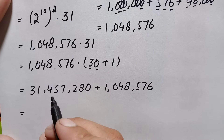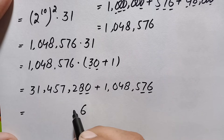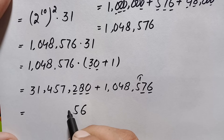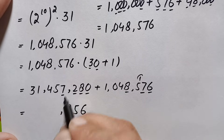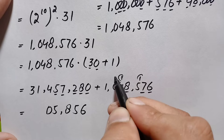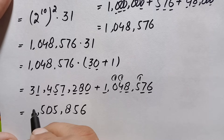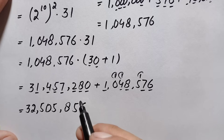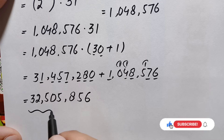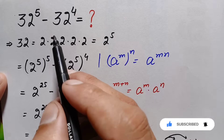Finally, adding 31,457,280 plus 1,048,576: starting from ones — 6 plus 0 is 6; 7 plus 8 is 15, write 5 carry 1; 5 plus 1 is 6 plus 2 is 8; 8 plus 7 is 15, write 5 carry 1; 4 plus 1 is 5 plus 5 is 10, write 0 carry 1; 1 plus 0 plus 1 is... giving the final answer 32,505,856. So 32 raised to power 5 minus 32 raised to power 4 equals 32,505,856.